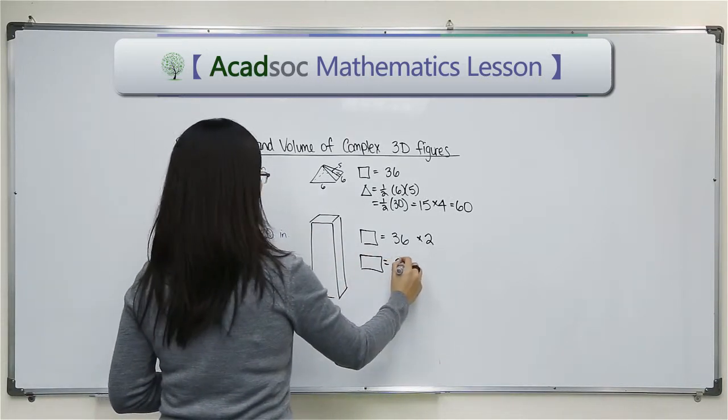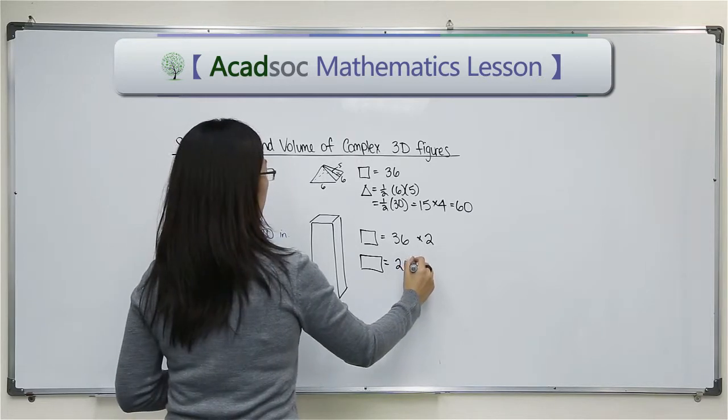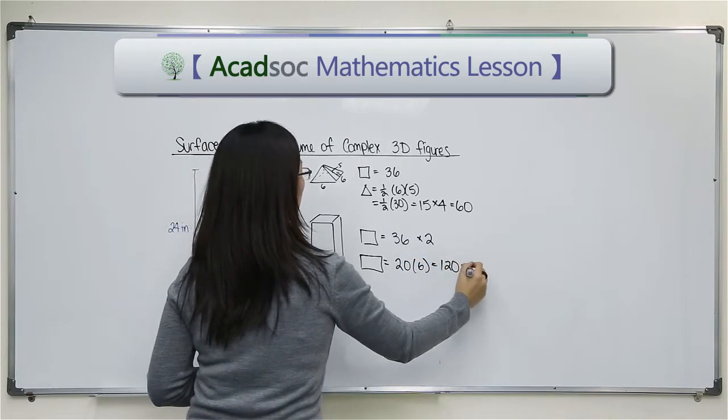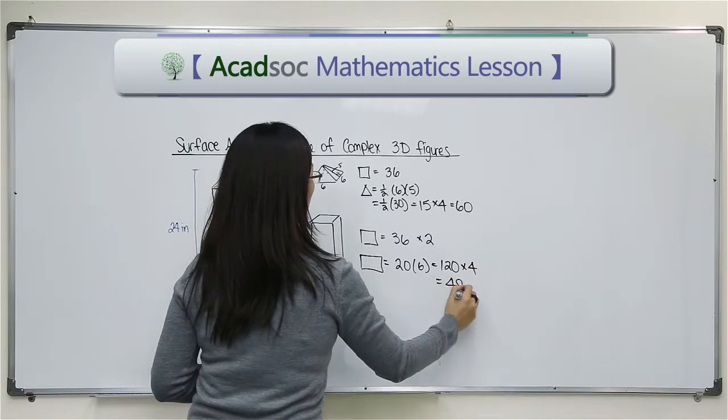And then I have each of these rectangles. They're all going to be the same for all four sides. The rectangle would be 20 by six, so that's 120. Multiply that by four and it's 480.